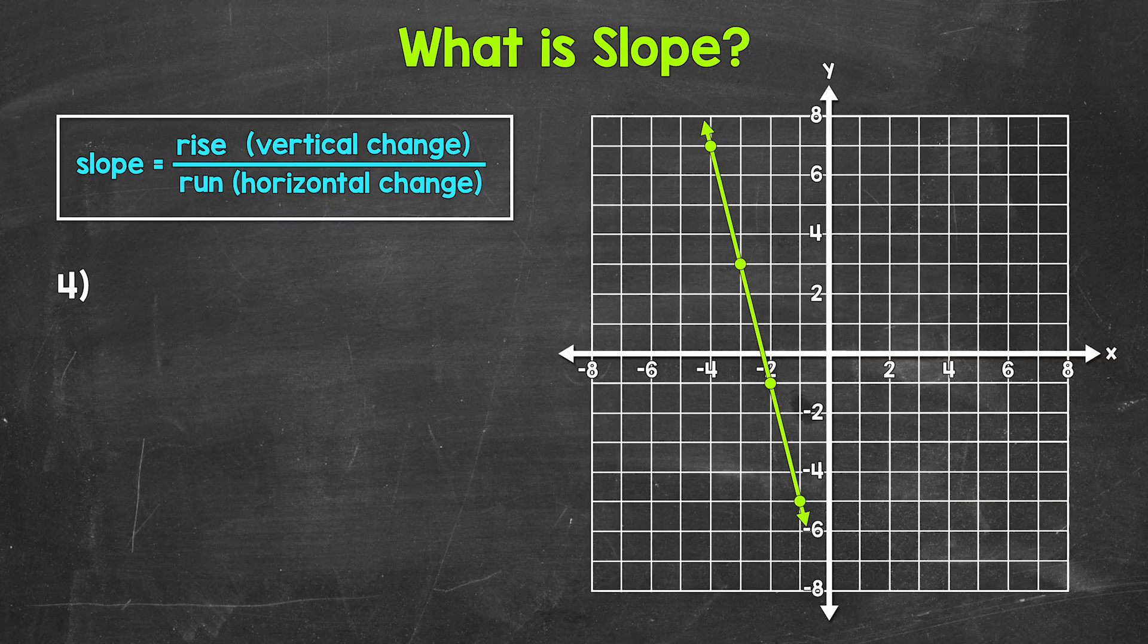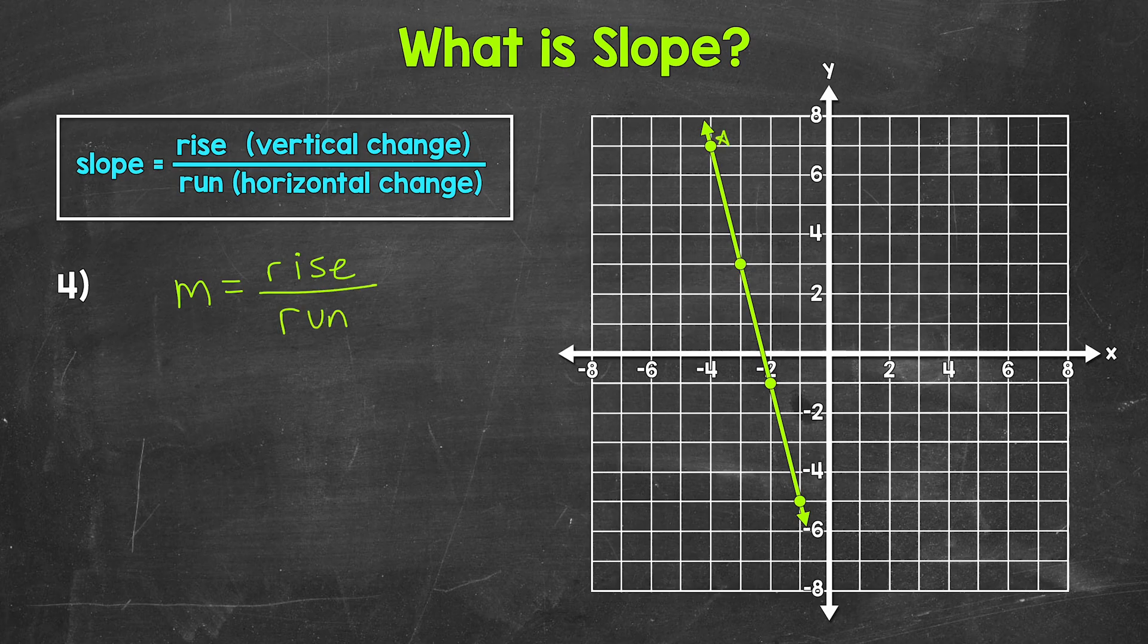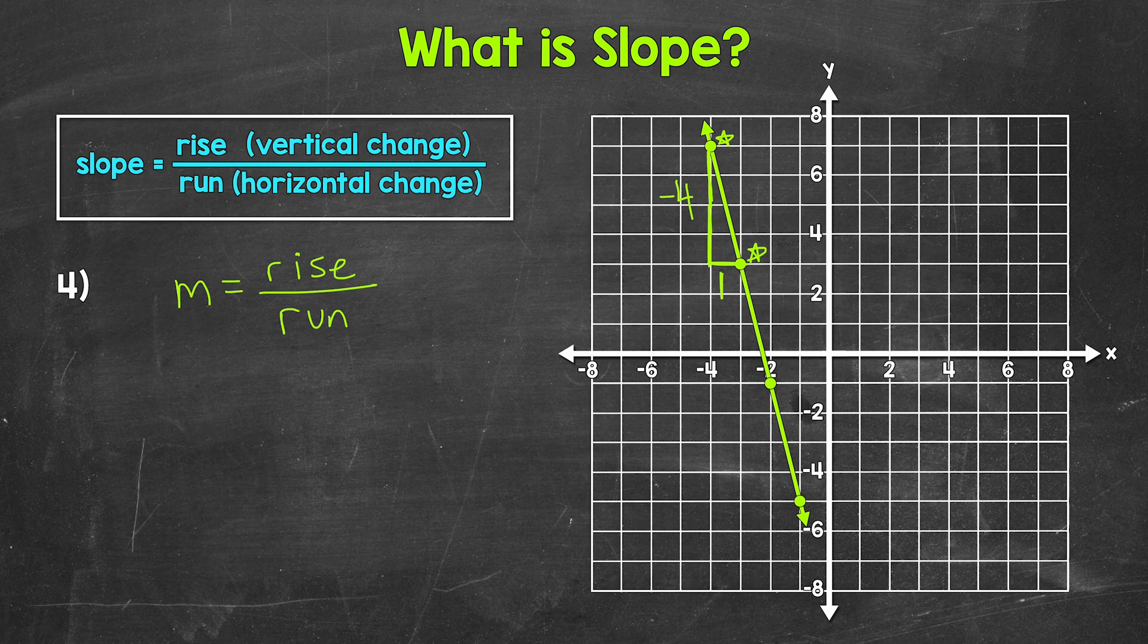Taking a look at number four, you'll notice that this line is moving downward from left to right. This is what we call a negative slope. So let's find the slope here. Slope equals rise over run. We will use these two points right here. So let's find the rise, the vertical change first. And we're going down here, so this is going to be negative. We go down one unit, two units, three units, four units in order to align with the other point. So our rise, our vertical change here is negative four. And then we go over one unit to get to our other point. And that's our run, the horizontal change. And that's a positive one because we move to the right one unit.